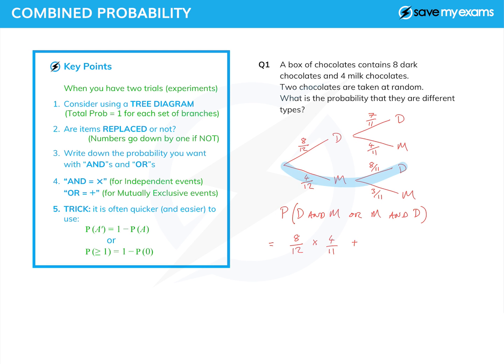And then we follow this route through the tree diagram. It's four twelfths for the milk chocolate, and then eight elevenths for the dark chocolate. And if you do all of that, that is 32 one hundred thirty-seconds, plus 32 one hundred thirty-seconds, which is 64 one hundred thirty-seconds. And that does in fact simplify to 16 out of 33. So there's an example of a combined probability question.